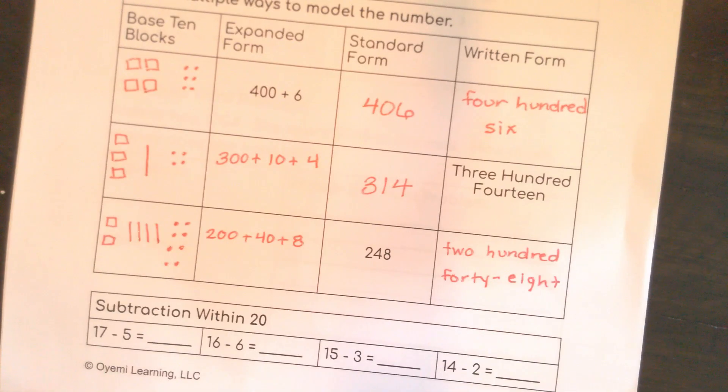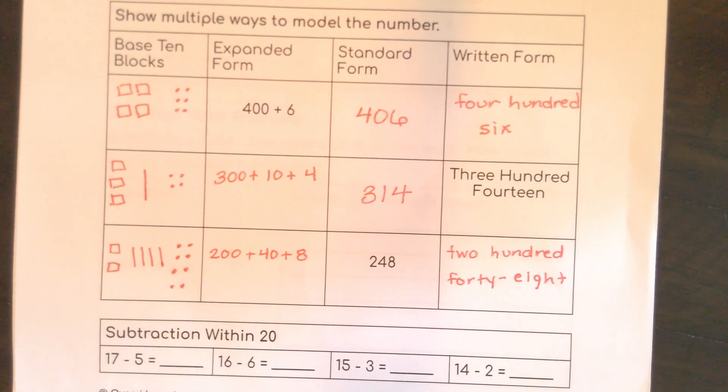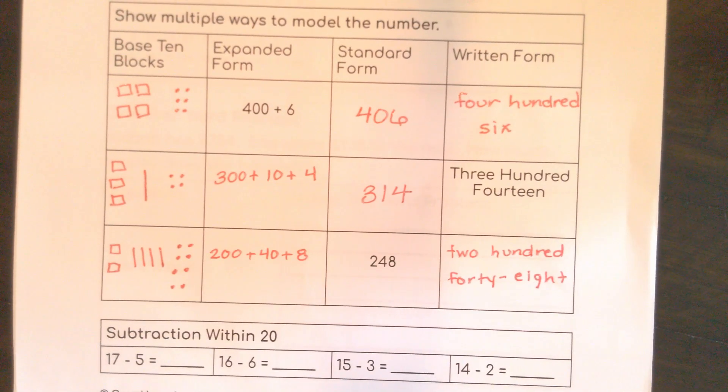So now, subtraction within 20. Let's look at subtraction within 20. So first, I have 17 minus 5. I'm always going to use that strategy of getting to 10, because 10 is our number system. So if I have 5, I know I need 5 more to get to 10, because look, I need the 10 here.